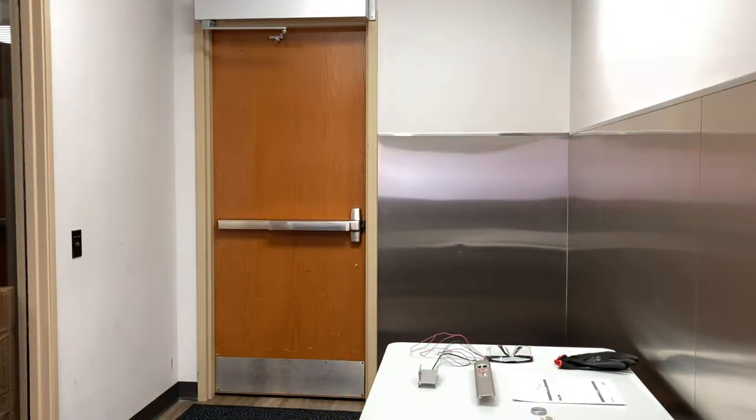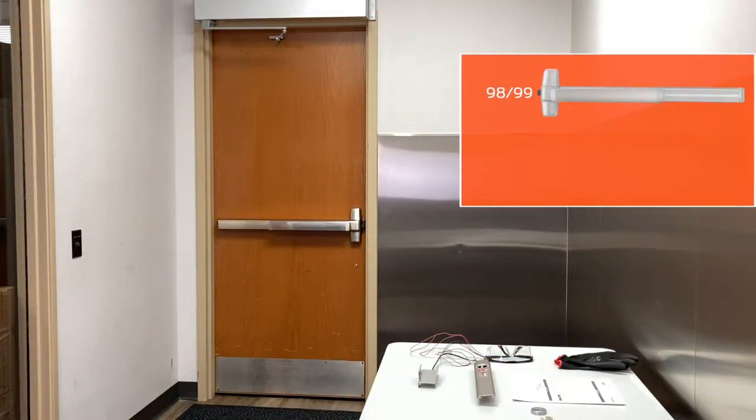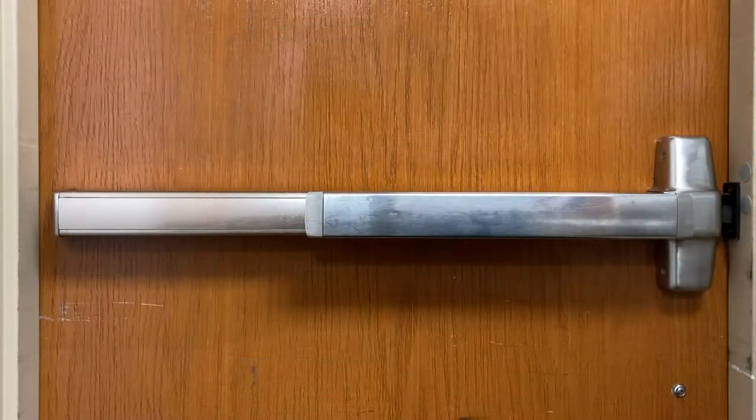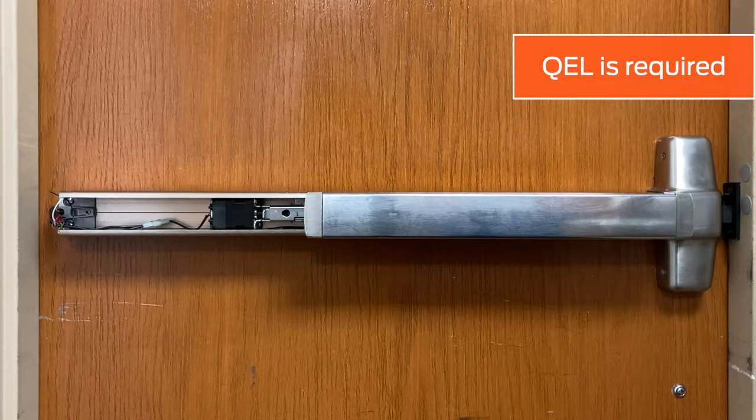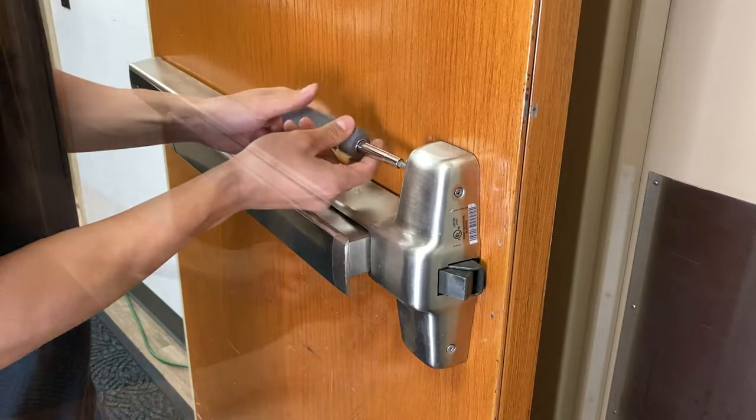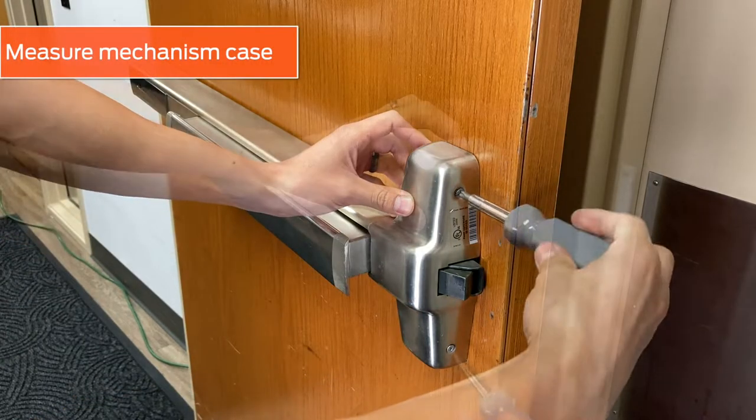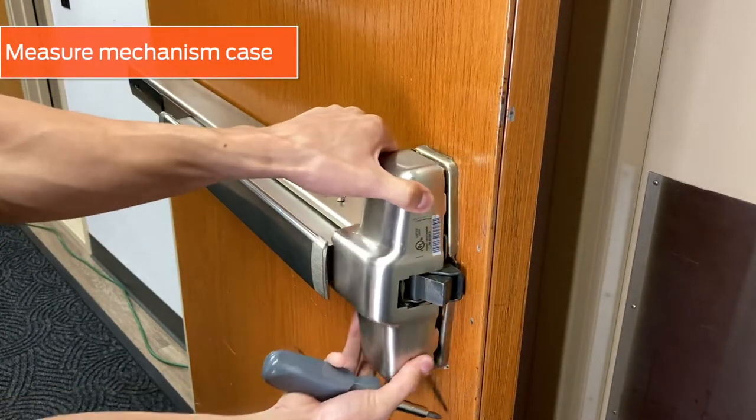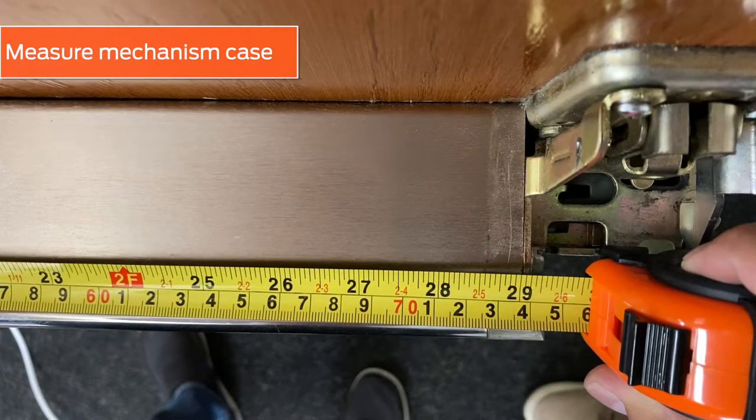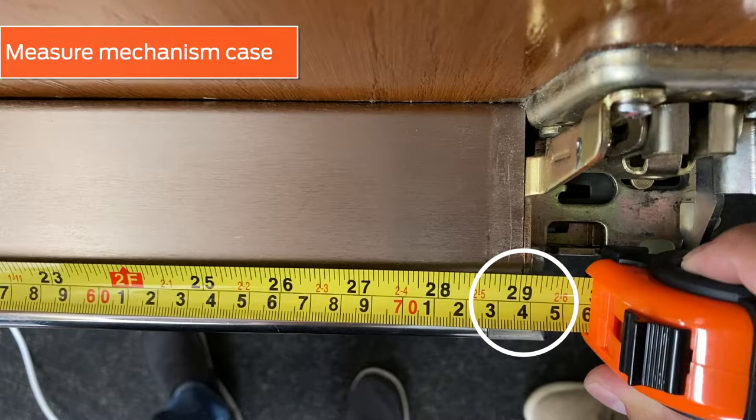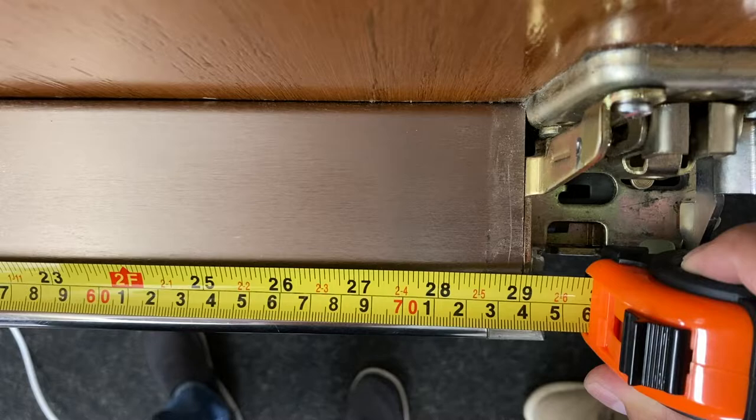Check that the opening is using a 9899 or 33A-35A series exit device and that the QEL option is installed and working. The QEL option must be installed and working prior to installing the ESL. Remove the center case cover of the exit device and measure the length of the mechanism case. It must be at least 29 inches in order to accommodate both the ESL and QEL assemblies. Then reinstall the center case cover.